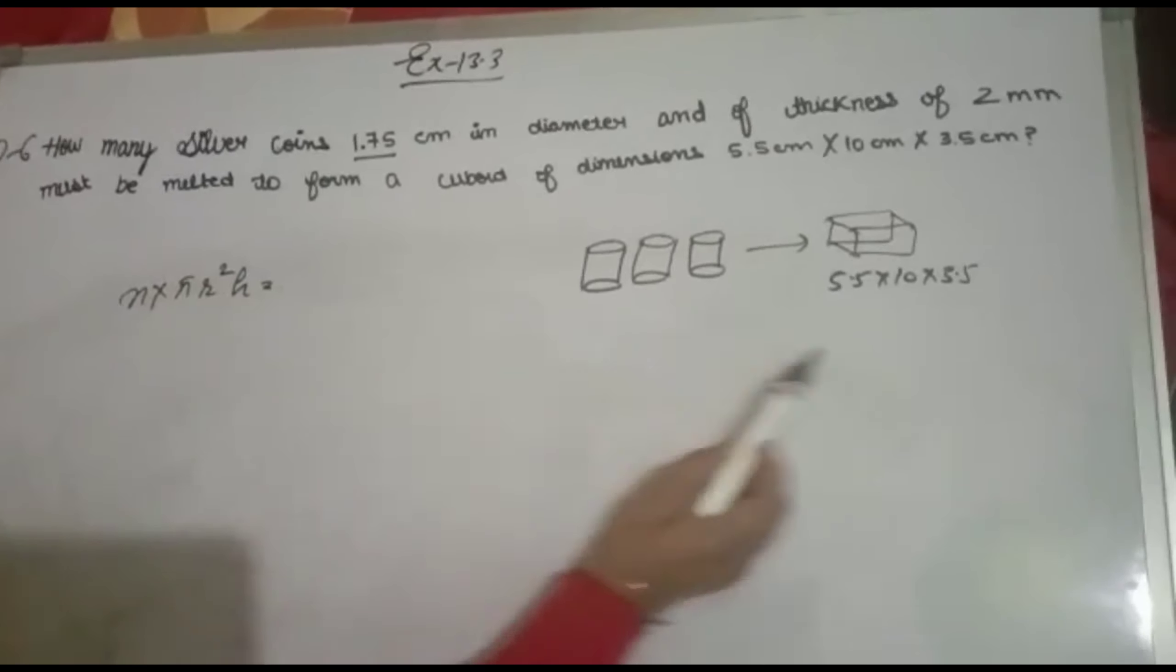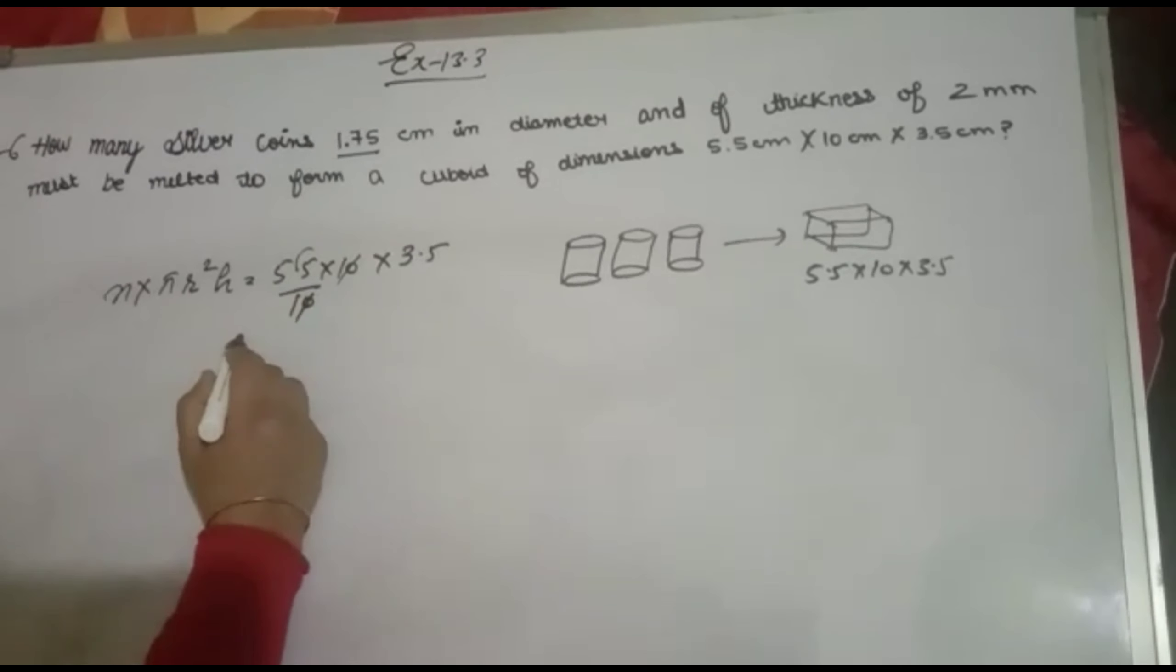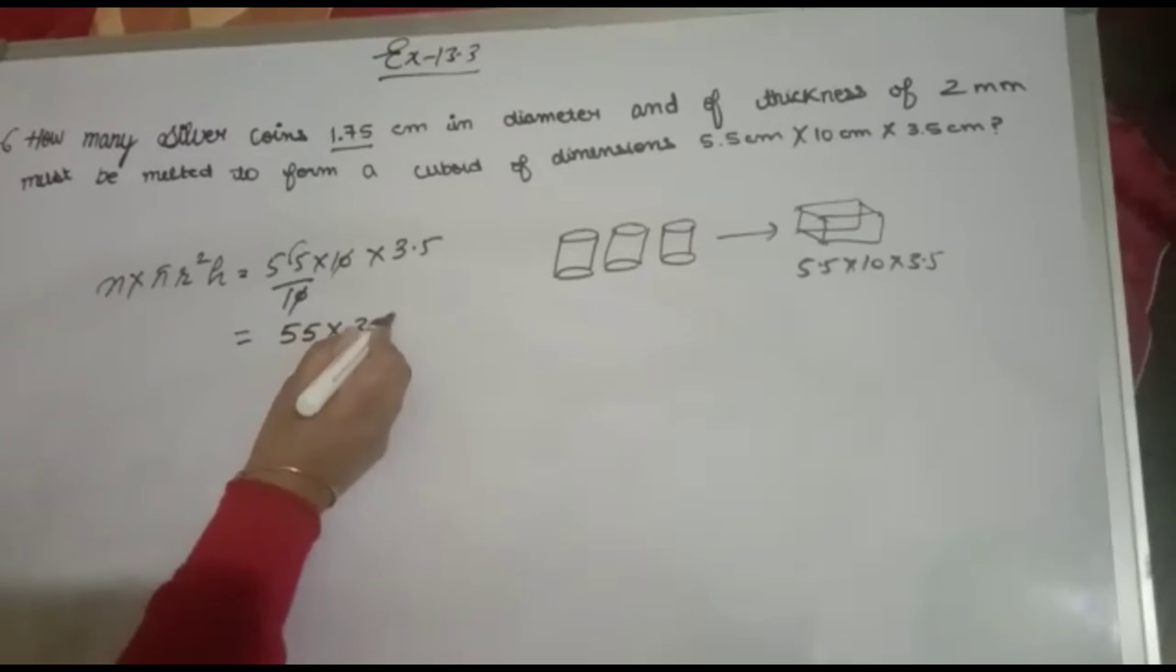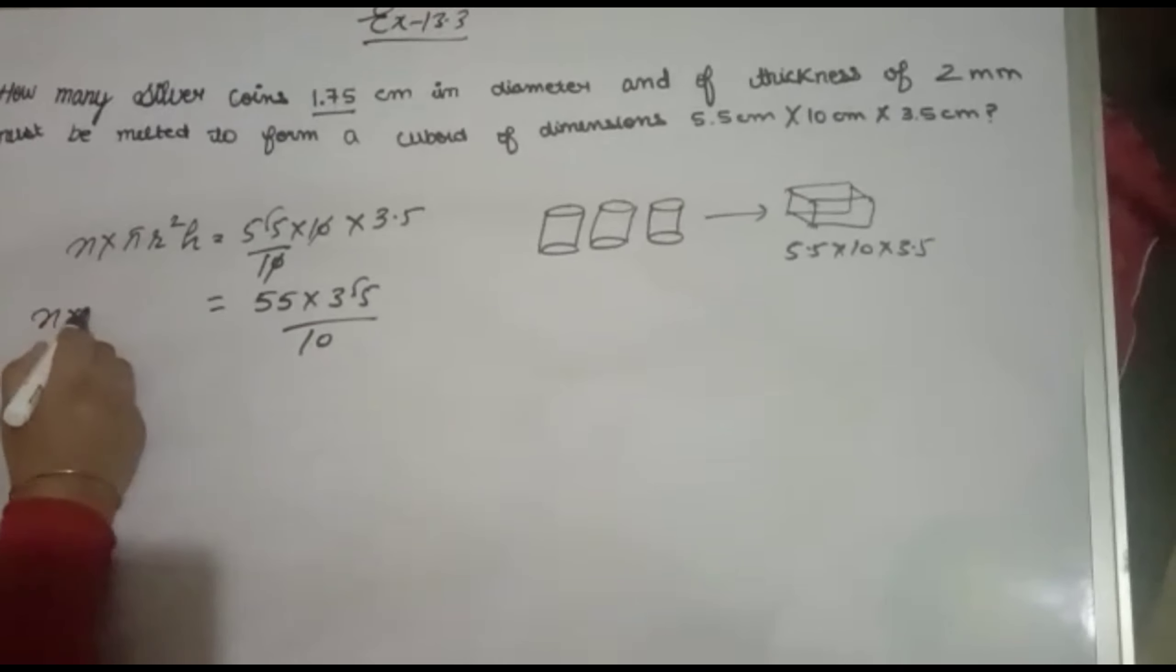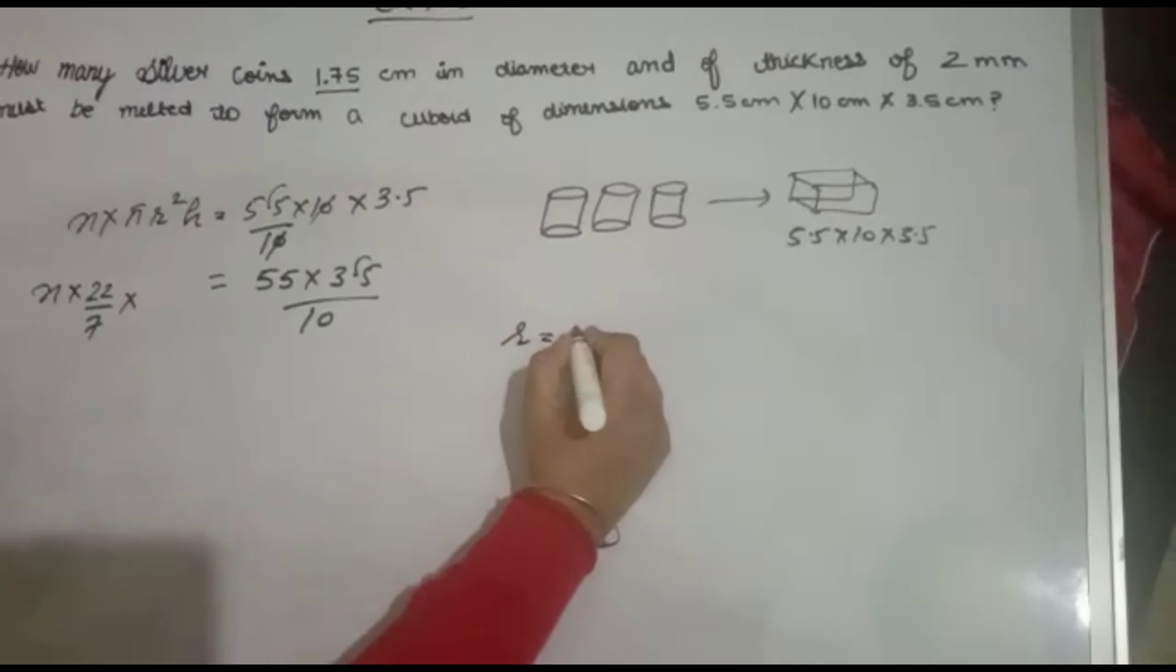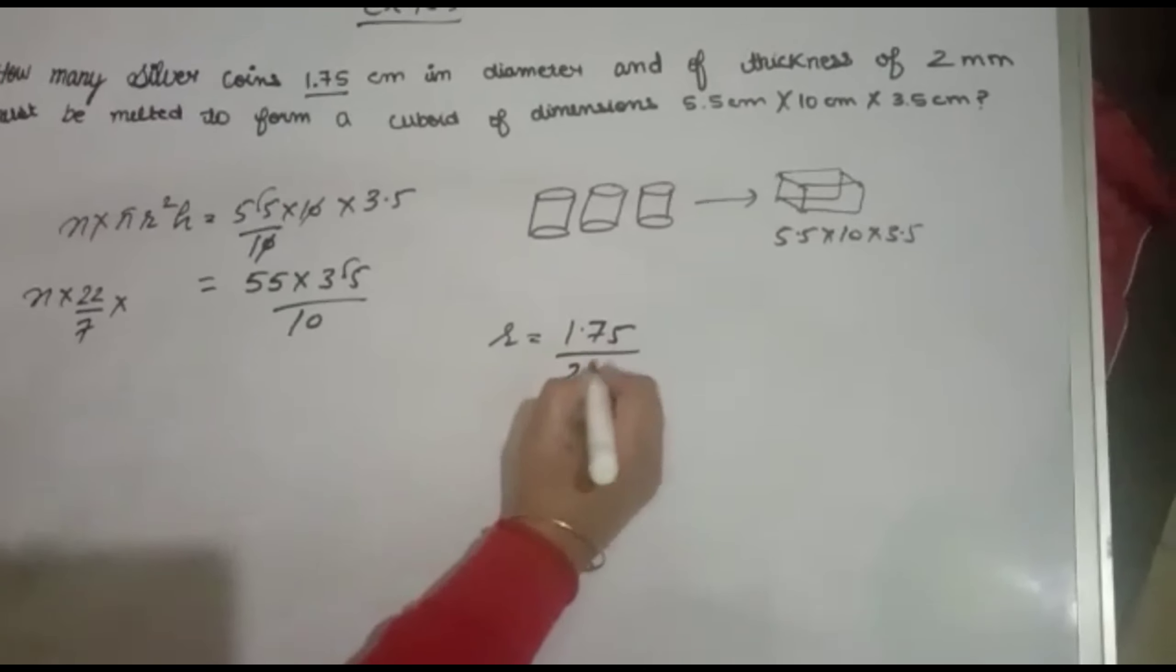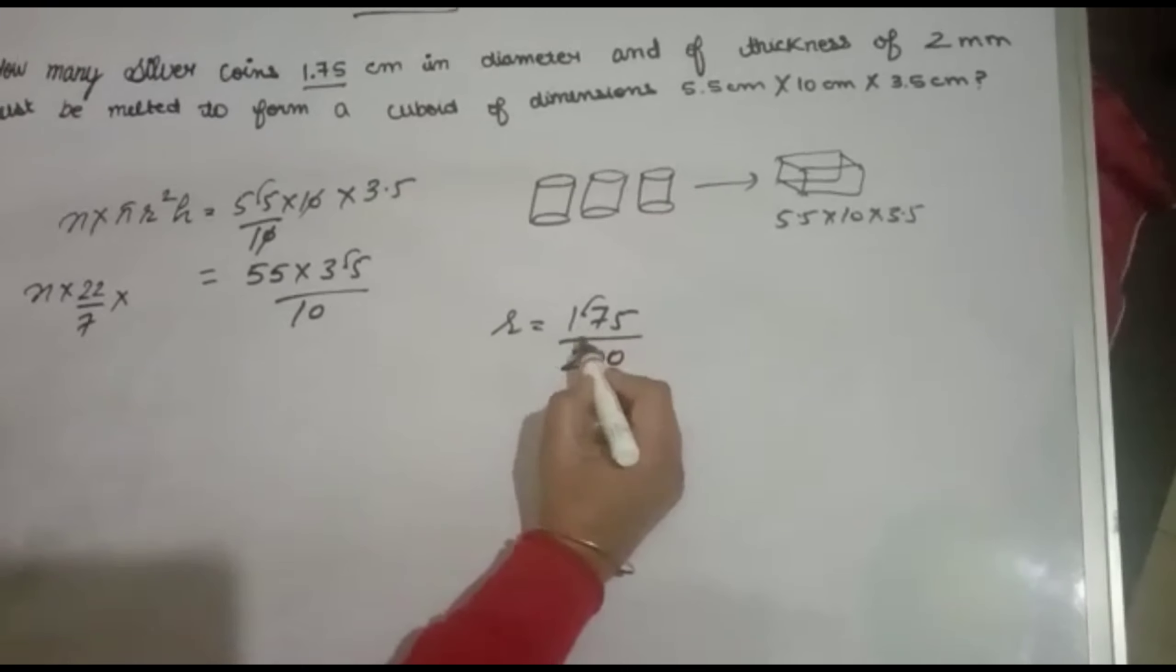Simplifying: 5.5 × 10 × 3.5 becomes 55 × 3.5/10. Using π = 22/7. The diameter is 1.75 cm, so radius r = 1.75/2. Removing decimal points gives 200 in the denominator.